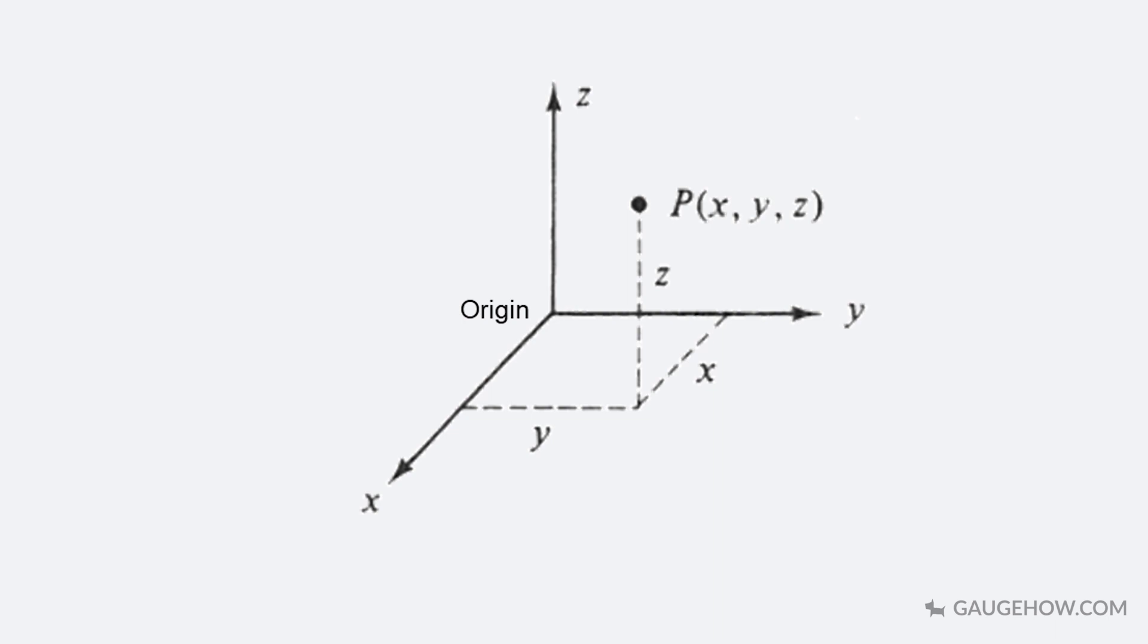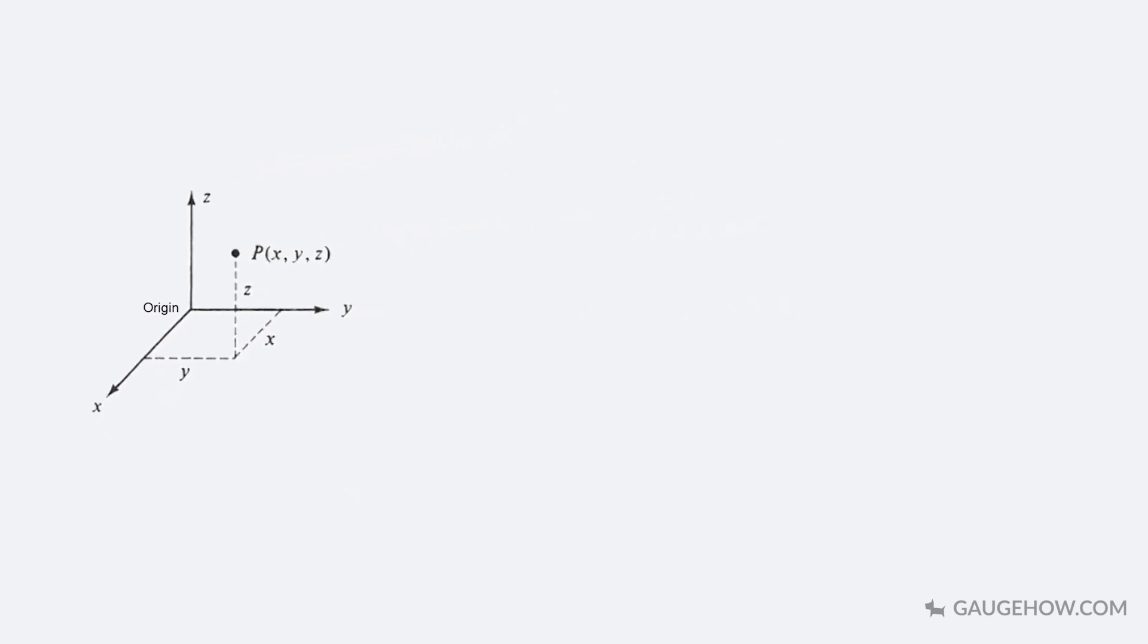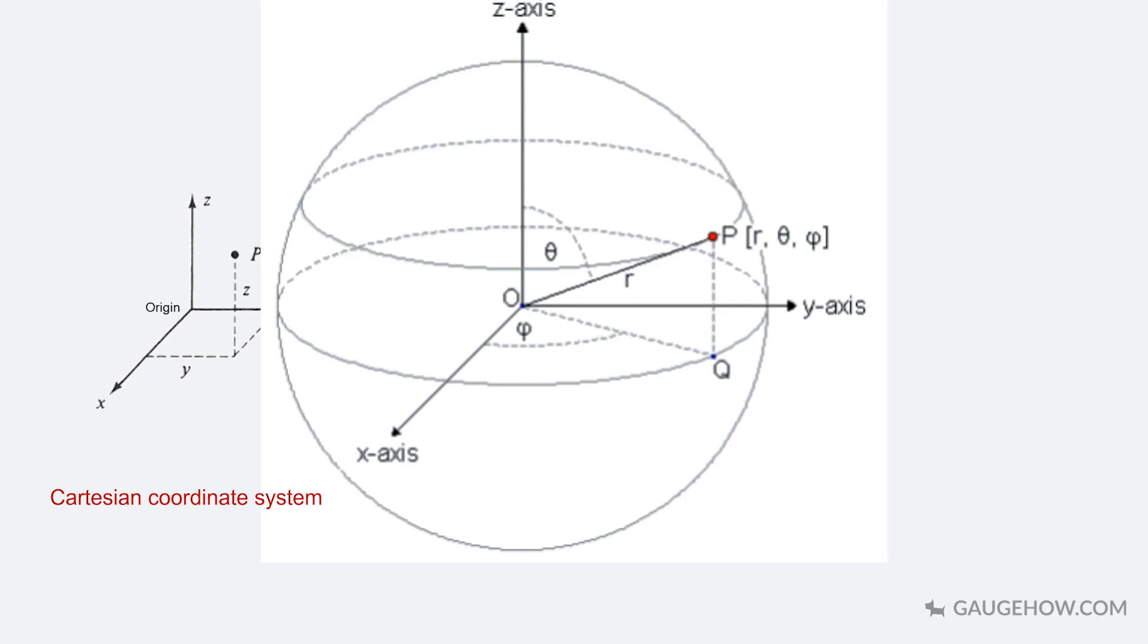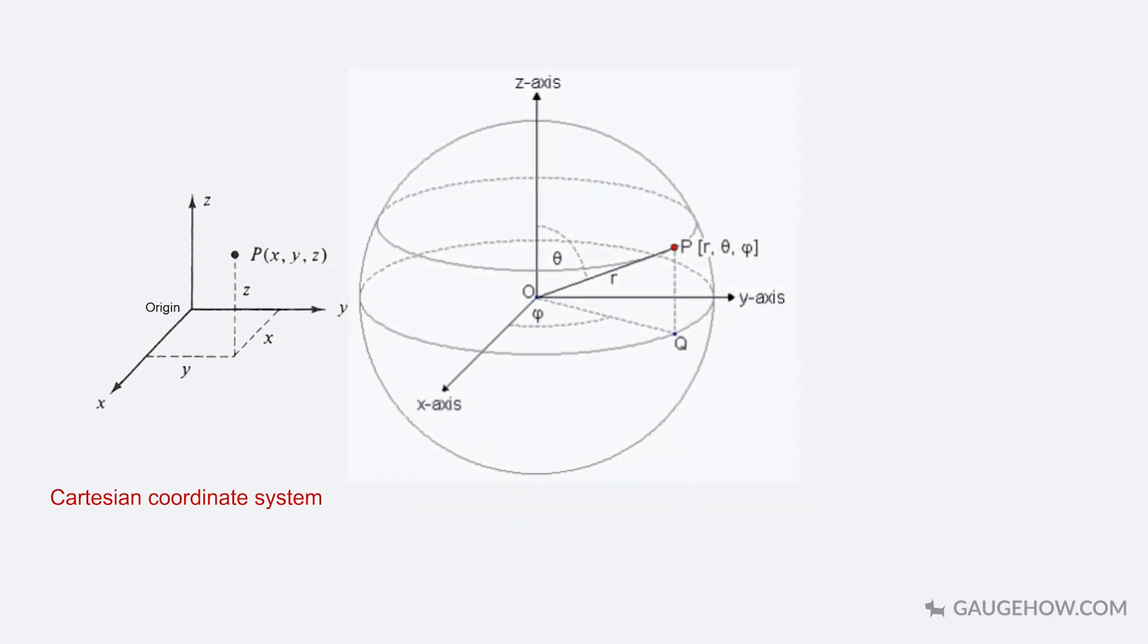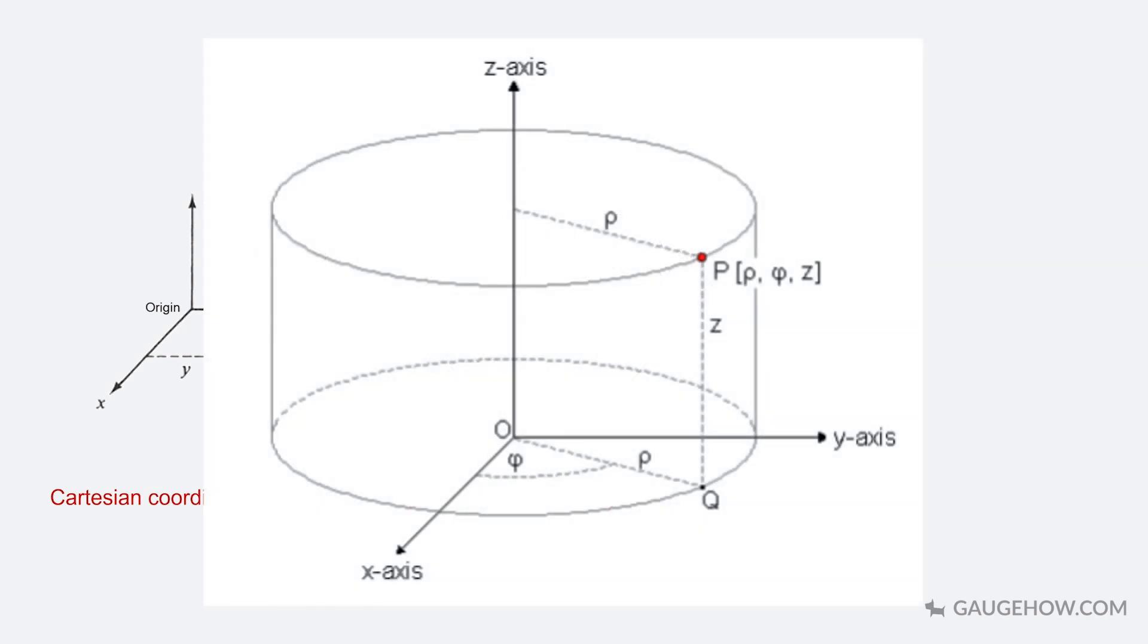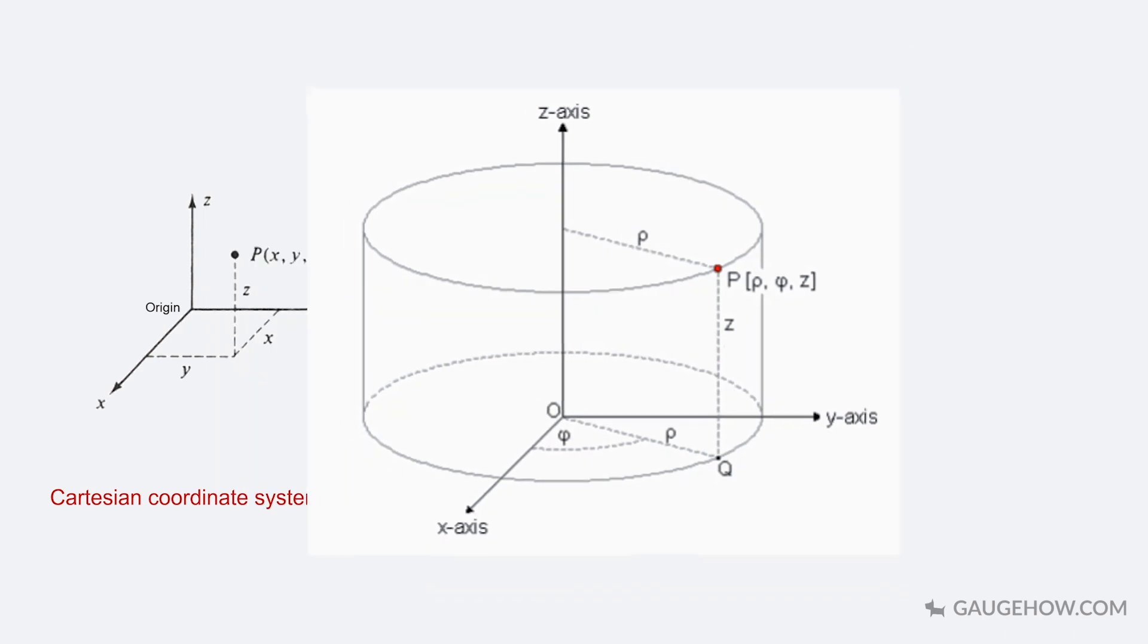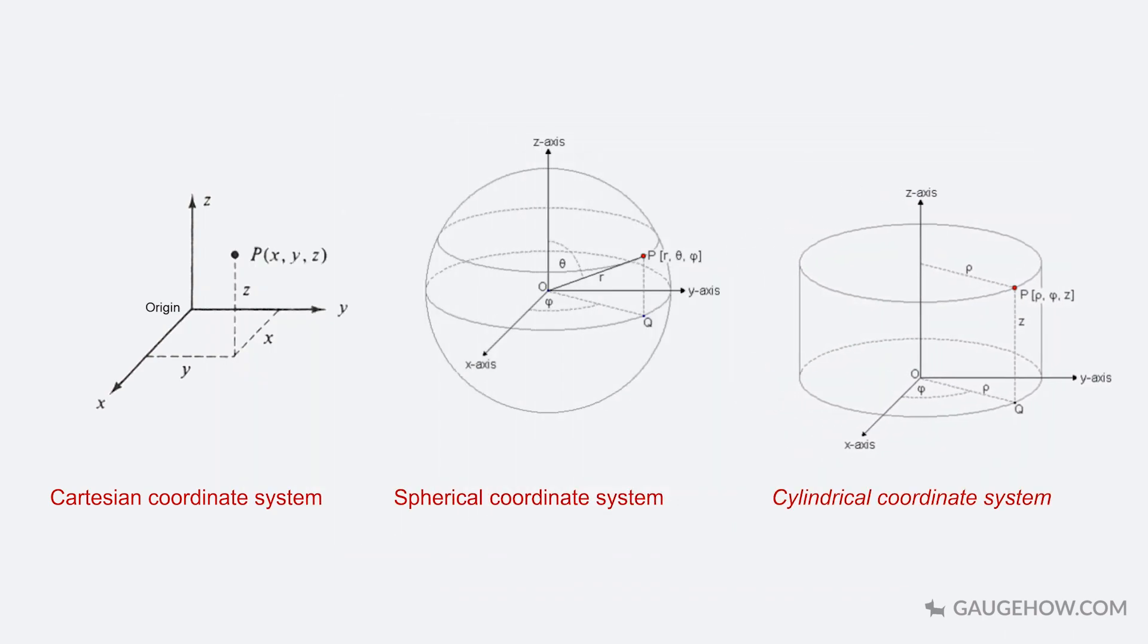The second type of coordinate system is the spherical coordinate system. In spherical coordinate system, the location of the point is specified by the coordinates r, theta and phi. The third type of coordinate system is the cylindrical coordinate system. In this system, the location of the point is specified by the coordinates rho, phi and z. Here we can see that the Cartesian coordinate system uses three distances, spherical coordinate system uses one distance and two angles, and the cylindrical coordinate system uses two distances and one angle.